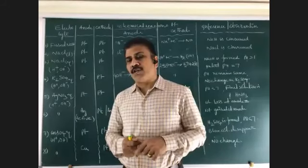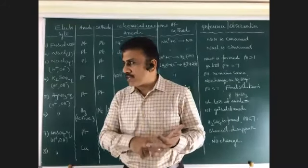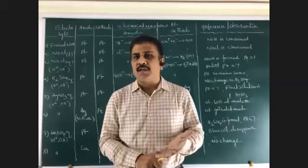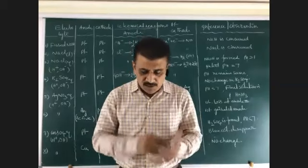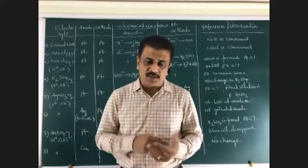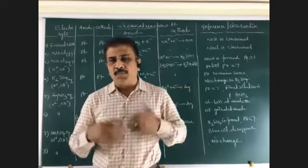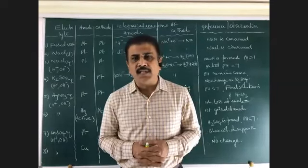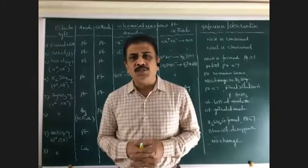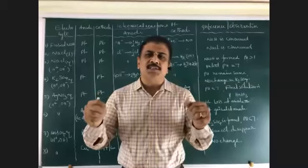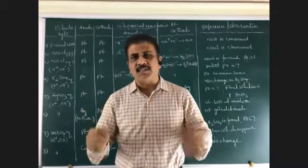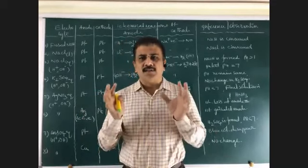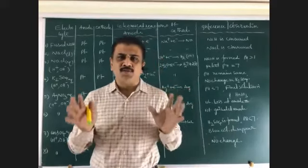No ions means no electricity. Urea solution, glucose solution, and sugar solution are not electrolytes because they have no ions. NaCl solution and KCl solution are electrolytes. All strong acids and strong bases are definitely electrolytes because they completely ionize — in strong acids H⁺ ion moves, in strong bases OH⁻ ion moves. All acids, bases, and salts are good conductors of electricity.